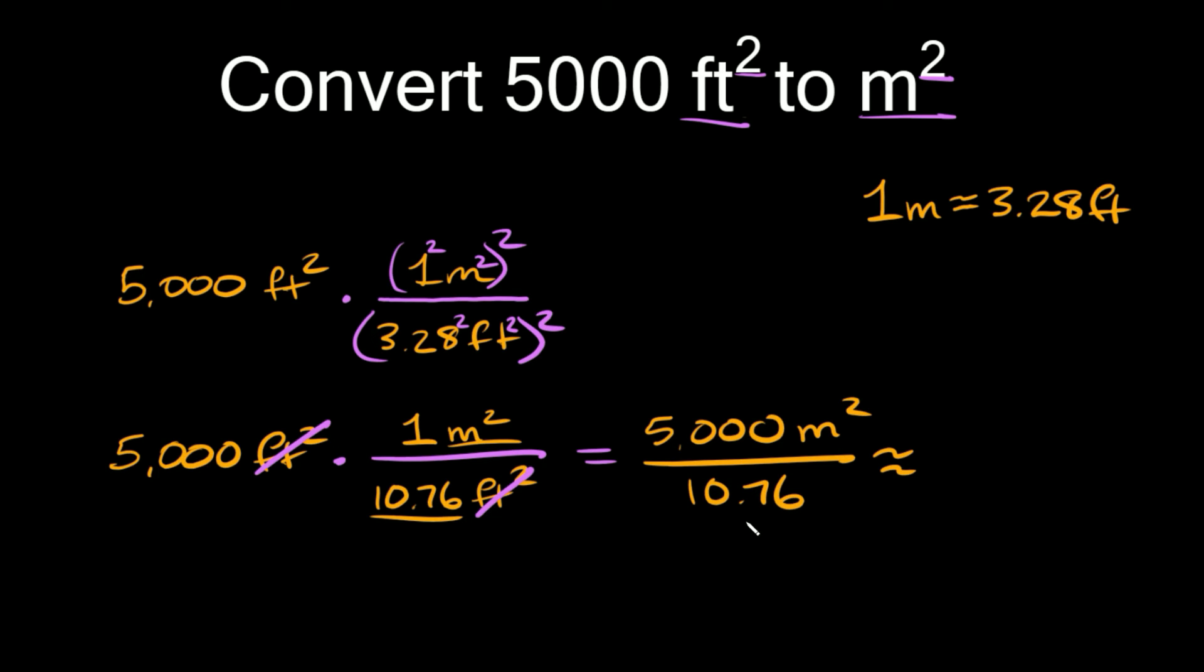So 5,000 divided by 10.76 is approximately equal to 464.7. And then don't forget your units right there, meters squared.